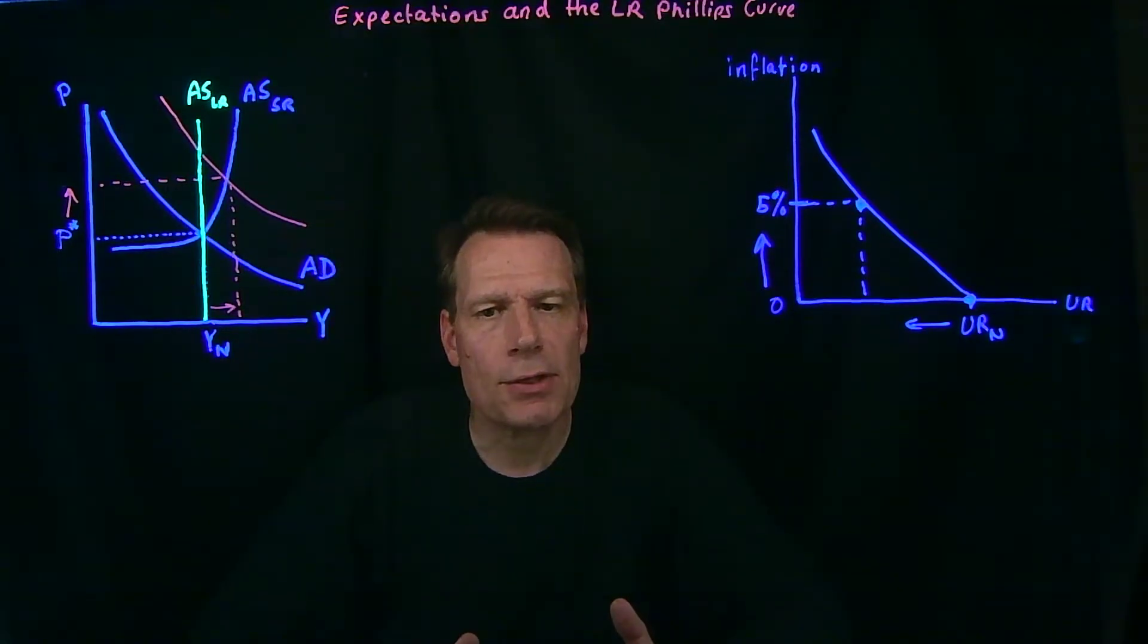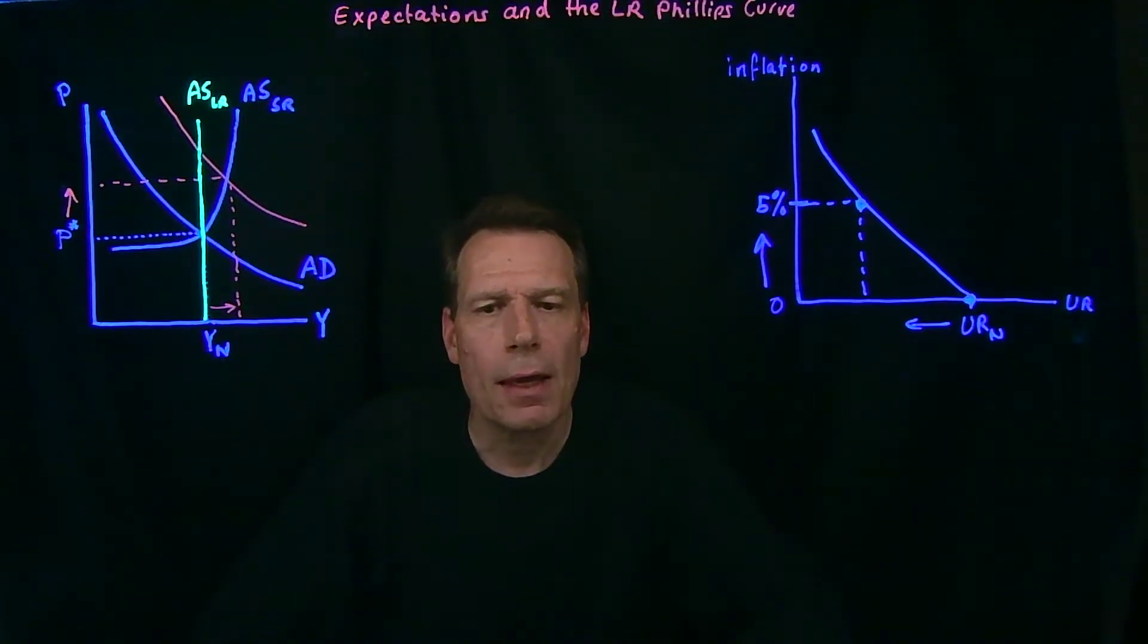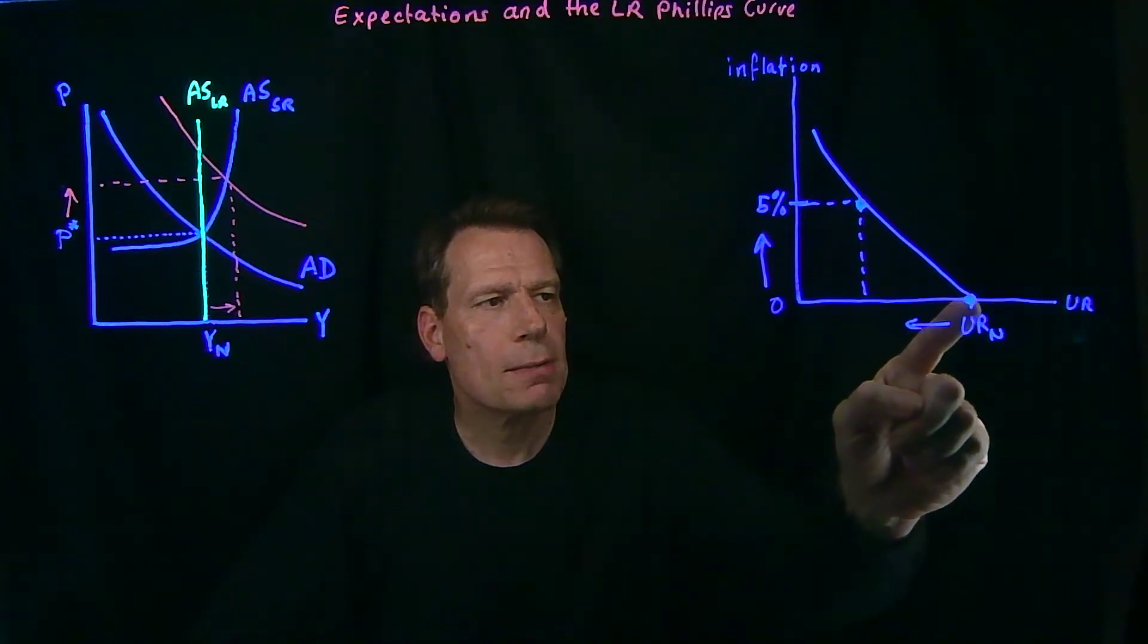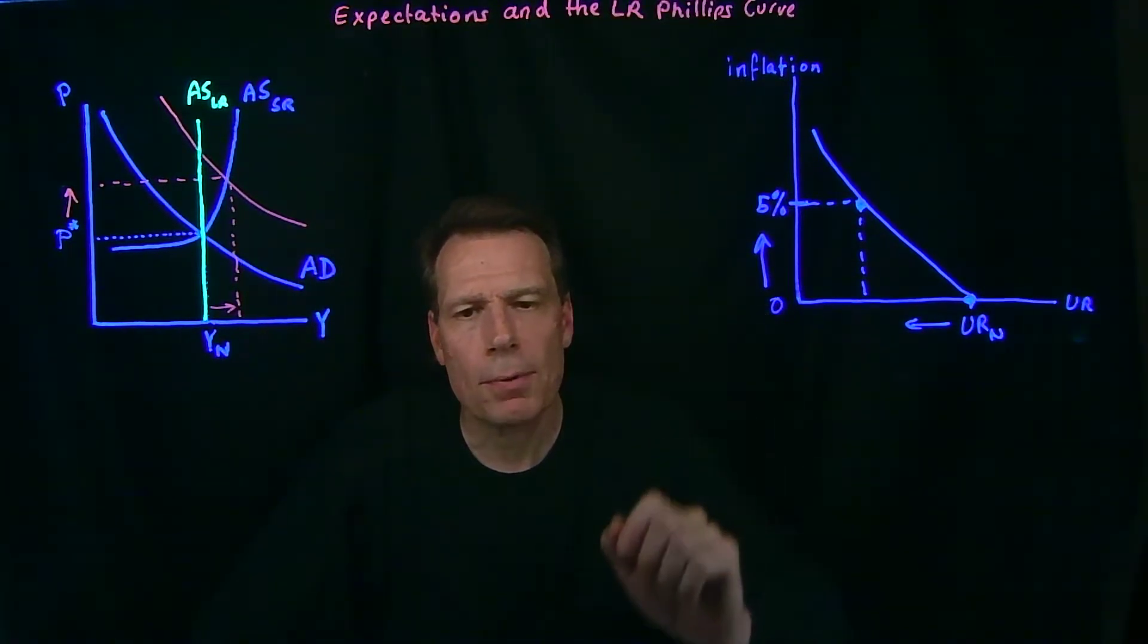That realization caused economists to re-evaluate what the Phillips curve means. Remember, we derived the Phillips curve by initially saying suppose that we are at the natural level of unemployment with 0% inflation.